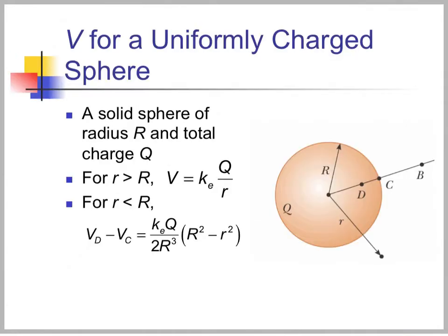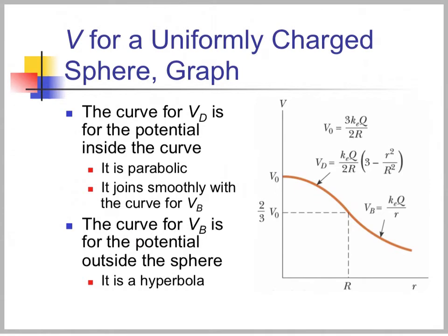For a uniformly charged solid sphere of radius R and total charge Q: when r is greater than R, the potential is simply kQ over r. When r is less than R, we can integrate the electric field from Gauss's law to get the potential difference between any two points inside. The potential inside is parabolic, joining smoothly at R with kQ over R. Outside it is a hyperbola, giving the potential outside the sphere.